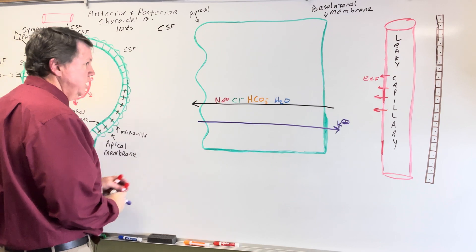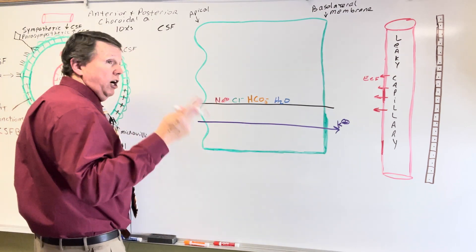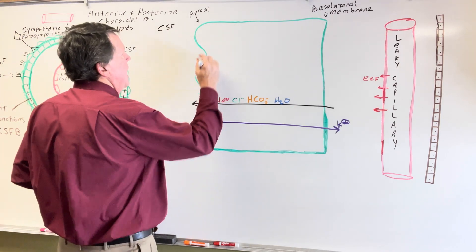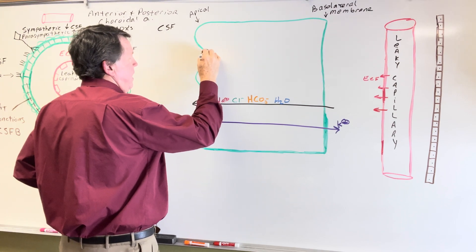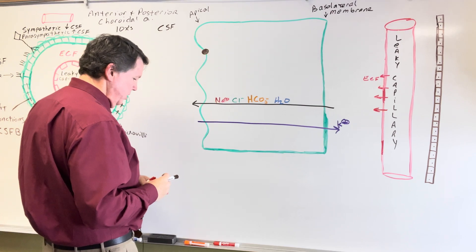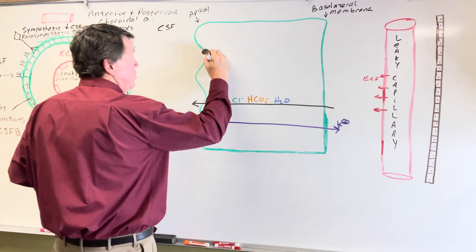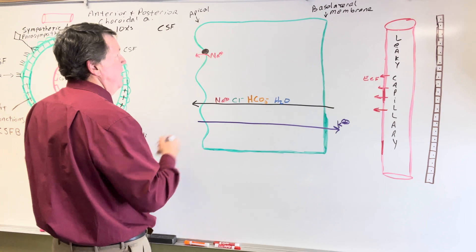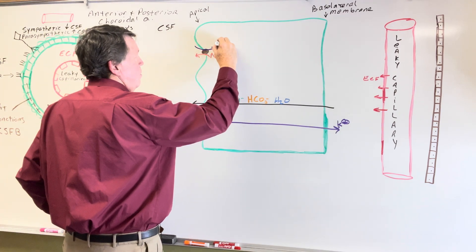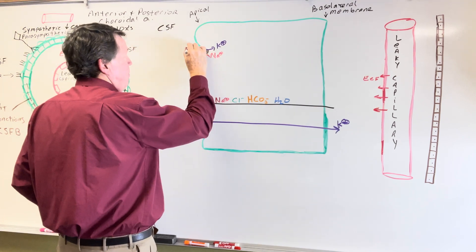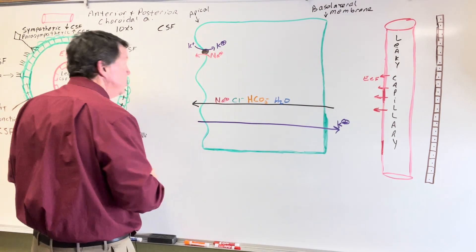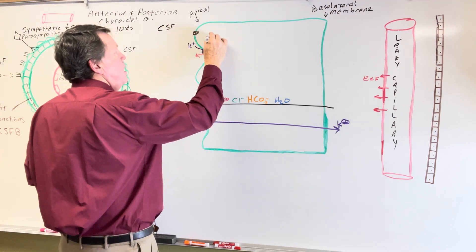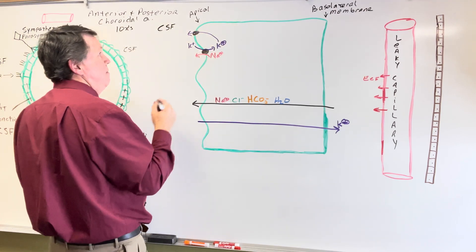Sodium transport is also a two-step process. We have a sodium-potassium pump on the apical membrane. Sodium is pumped into the CSF, while potassium is pumped out of the CSF. That potassium can then go through channels and basically come back into the CSF. Now that sodium has been pumped into the CSF, sodium can also pass over on the basolateral membrane.